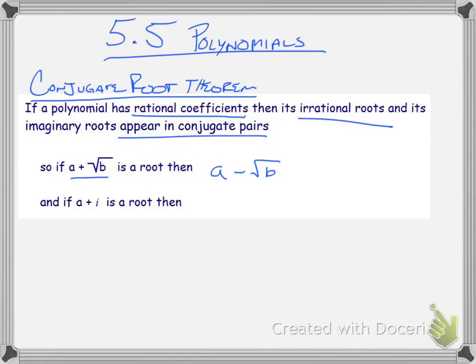And again, with the imaginaries, if I have a root, a plus i is a root, then its conjugate, a minus i, will be a root. So they're always going to appear as conjugate pairs if the roots are irrational or imaginary.